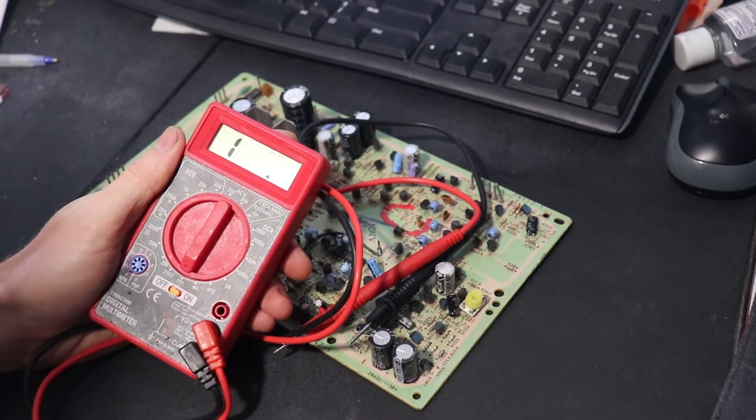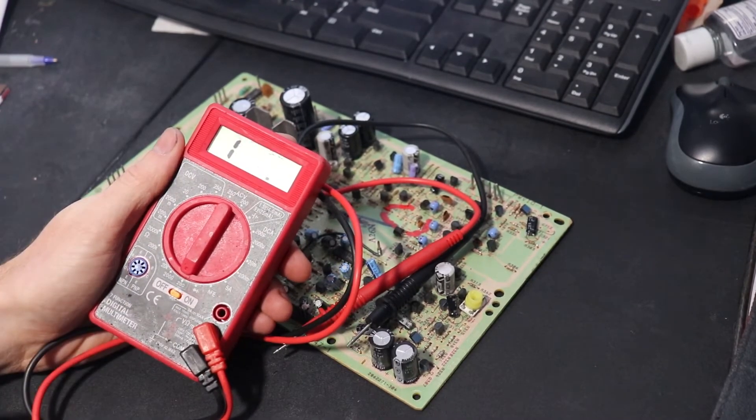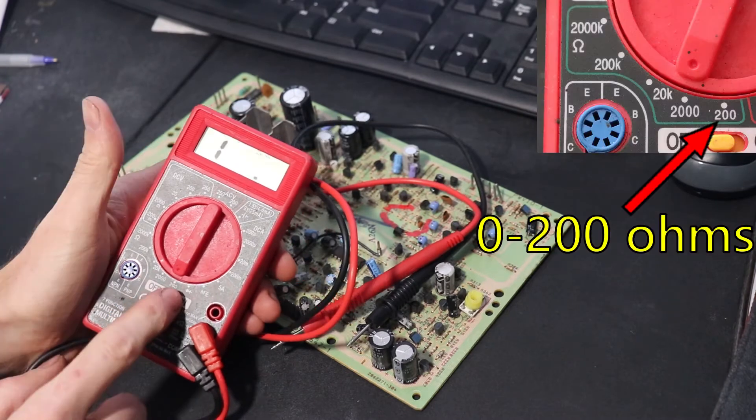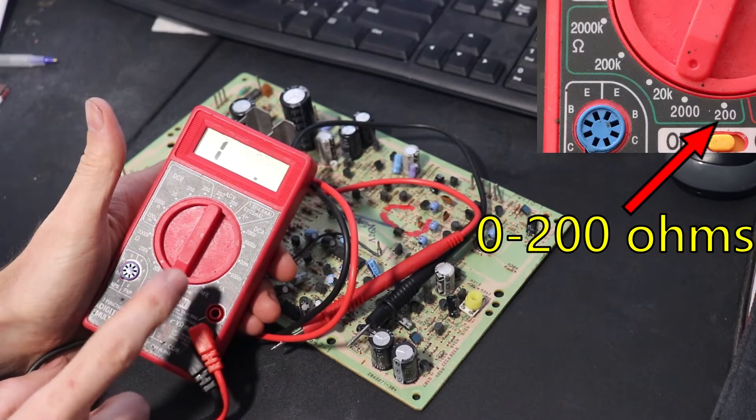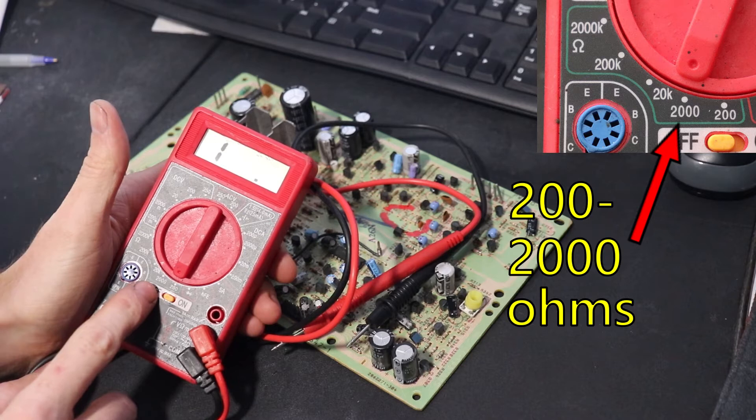Basically all these are is ranges. So from 200 ohms or less you want to go with this setting. 2000 ohms to 200 ohms you want to go with this setting.